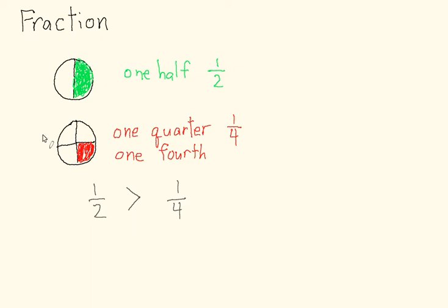It makes sense intuitively: if you took a pizza and divided it into two equal pieces, you'd get more than if you divided it into four equal pieces and took one piece. In fact, if I gave you two quarters of the pizza — two of these one-quarter pieces — you would end up with the equivalent of one half of the pizza.